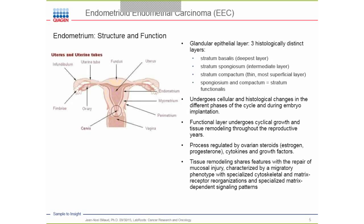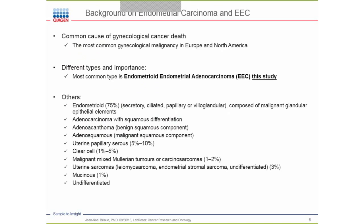The endometrium is the structure affected by this carcinoma — it's the glandular epithelial layer, consisting of three important histological layers. The main components are the spongiosum and compactum stratum functionalis. This tissue undergoes cellular and physiological changes throughout the cycle and during embryo implantation, functioning as a tissue remodeling-like structure throughout the reproductive years, regulated by ovarian steroids and many cytokines and growth factors. EEC, or endometrial carcinoma, is the most common gynecological malignancy in Europe and North America.